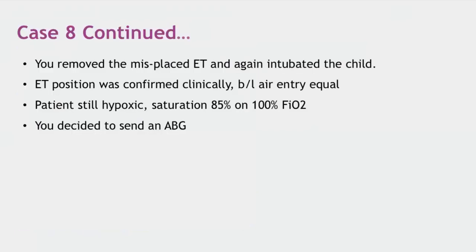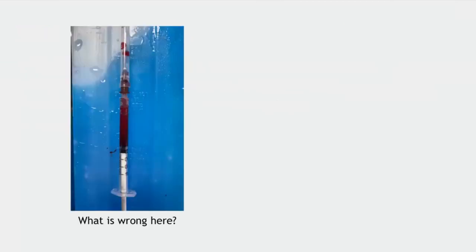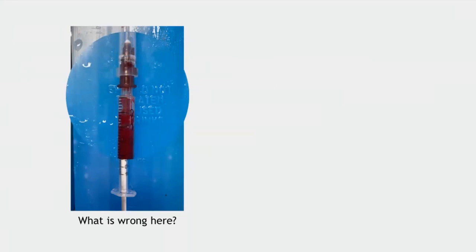The displaced ET tube was removed and the child was re-intubated. Tube position was confirmed clinically with bilateral equal air entry, but the patient was still hypoxic with SpO2 of 85% on 100% FiO2. An ABG was sent, but the syringe had air bubbles in it. This is a major problem — air bubbles can give erroneous PO2 values.